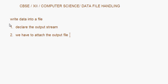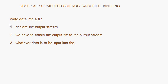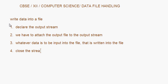Then we have to attach the output file, in which the data has to be written, to the output stream. Then whatever data is to be input into the file — either accepted from the user or from some other source — is written into the file. Finally, we can display the data or close the stream. For now, I am just covering writing data into a file; displaying data from a file will be taken up later.